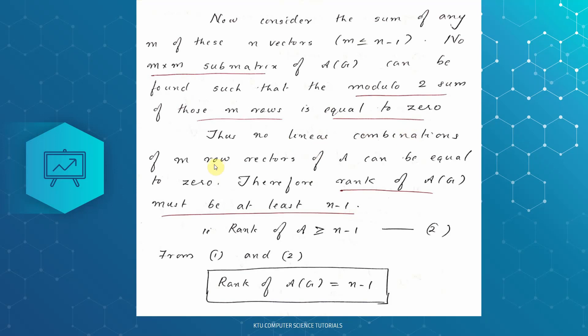No linear combination of m row vectors of A can be equal to 0. So if we choose a submatrix of A(G), the rank of A(G) must be at least n-1. That means rank of A must be greater than or equal to n-1. This is the second equation.